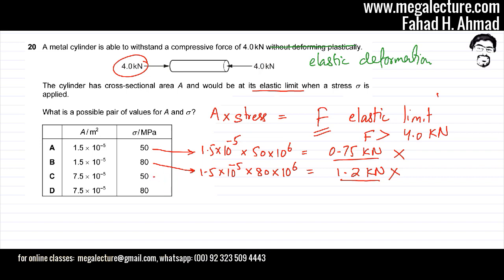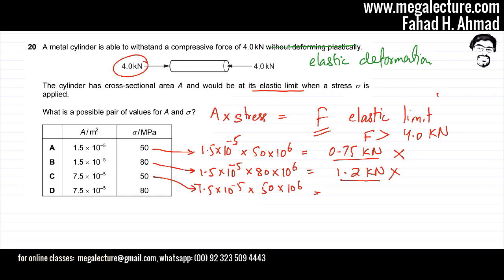For option C, it's 7.5×10⁻⁵ multiplied by 50×10⁶, and the answer is 3.75 kilonewtons. Again, this is less than the 4 kilonewton force the cylinder can already withstand, so this option is also eliminated.